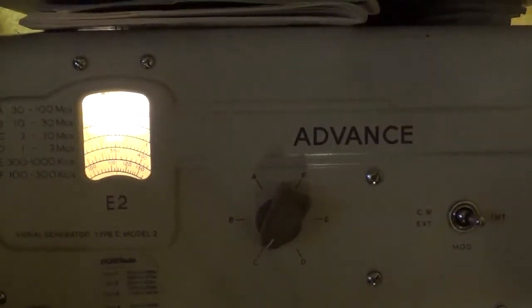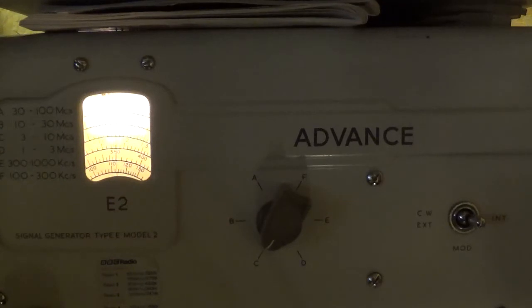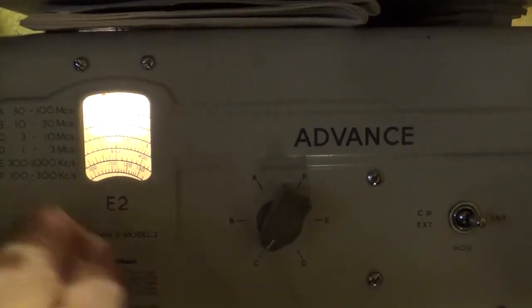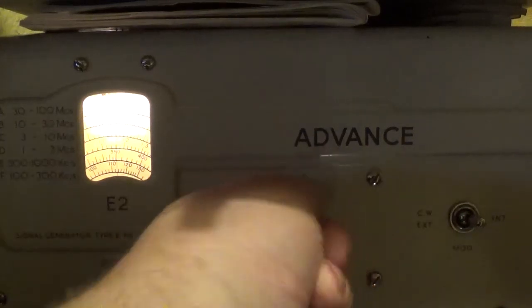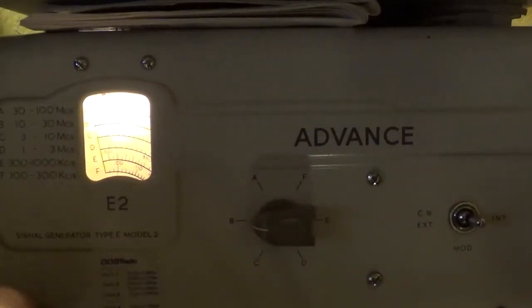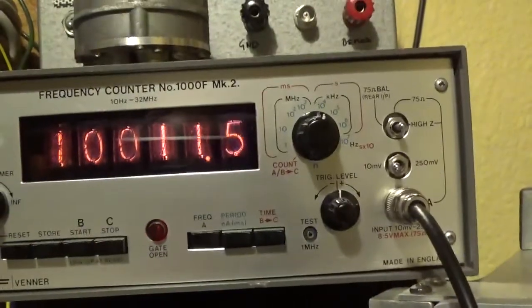We'll go up to about 32 meg, and obviously you don't need any more than that for an AM broadcast receiver. Let's go up to B range. Let's go up to 10 meg. That's dead on. I've got 10.11.